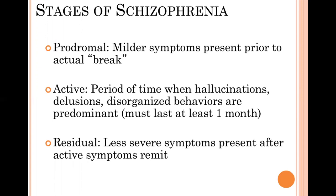Then at some point in time, they move into what we call the active phase of schizophrenia. During this time, you see hallucinations, delusions, disorganized behavior — all of these things are present and now they predominate their characterization. As we're diagnosing schizophrenia, they have to demonstrate these active phase symptoms for at least one month in order to qualify for a diagnosis of schizophrenia.